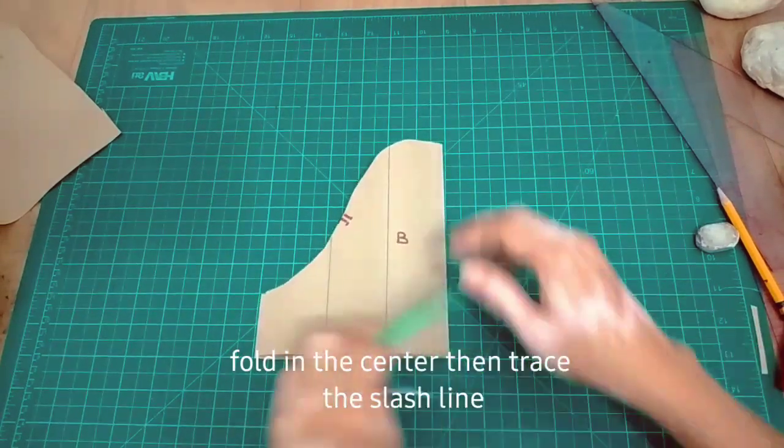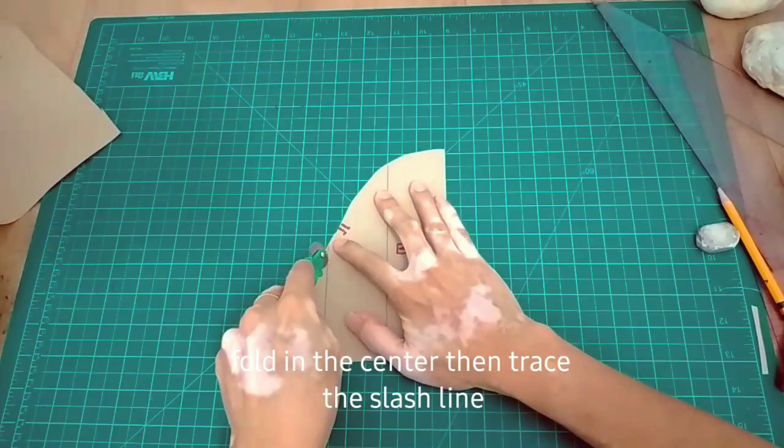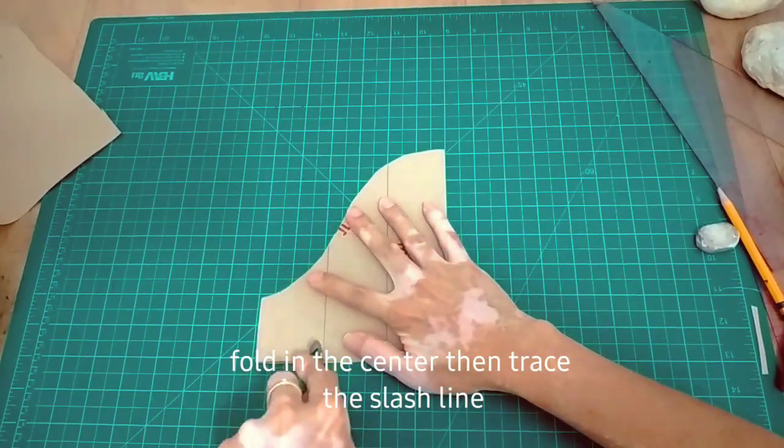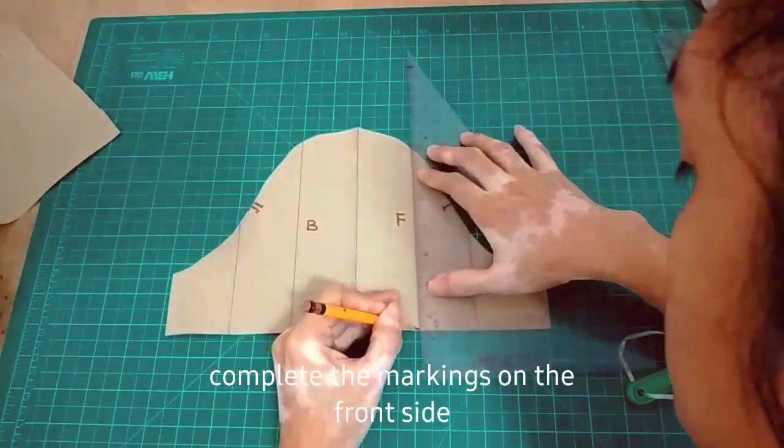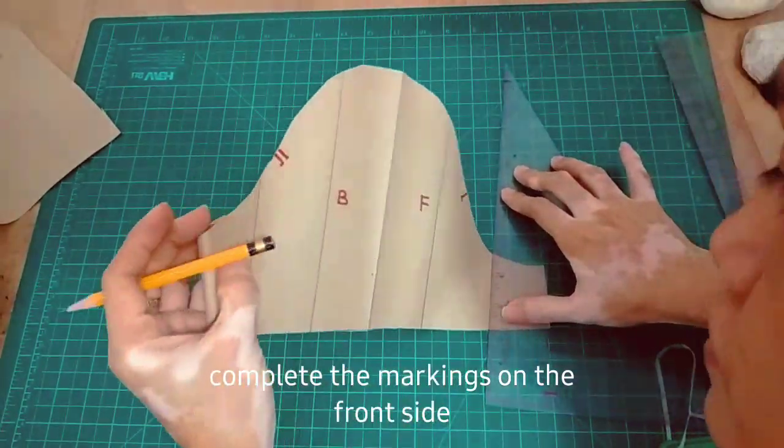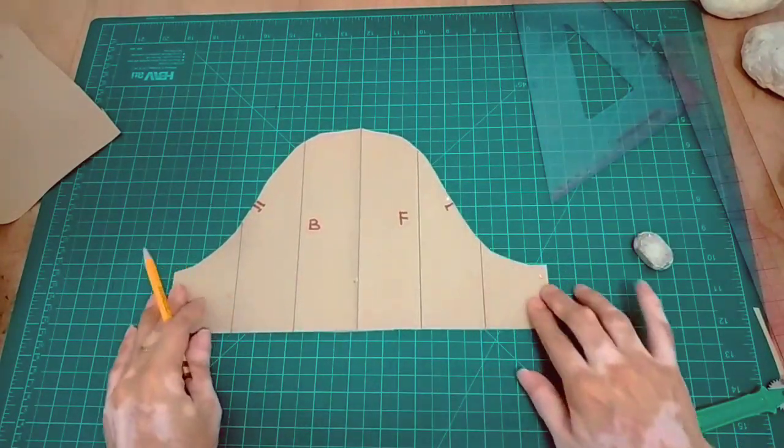Another way of telling kung saan yung back and front: fold in half and then trace the slash lines, and then complete mo lang yung markings na ginawa natin para dun sa front side ng ating pattern.